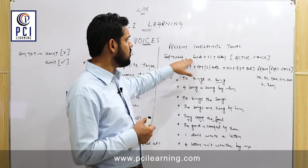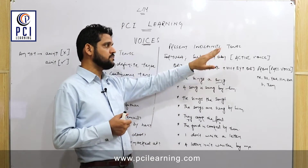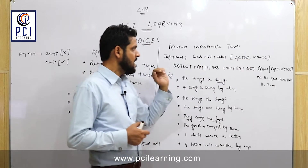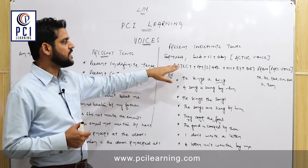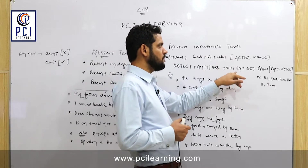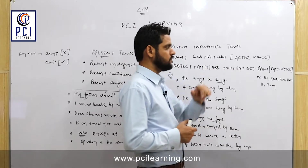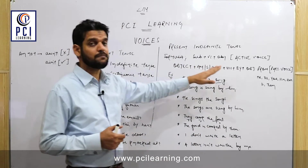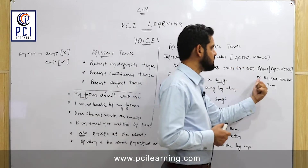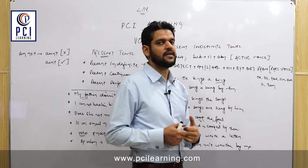The formula for active voice is: Subject + First Form of Verb + Object. The passive voice formula is: Object + is/are + Verb Third Form + by + Object Pronoun. The object pronouns we use are: me, us, you, him, her, it, them.